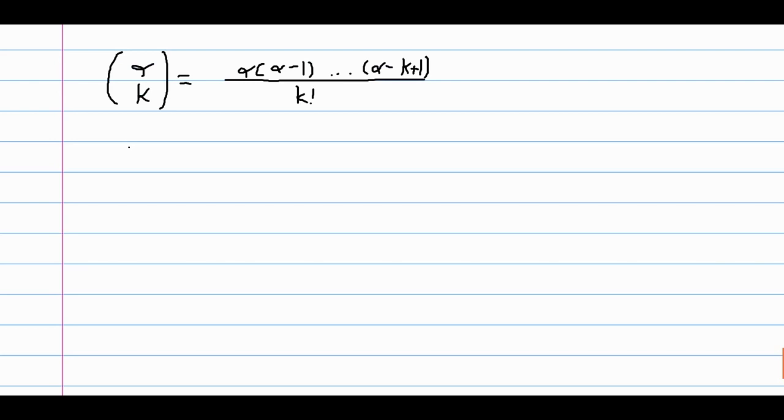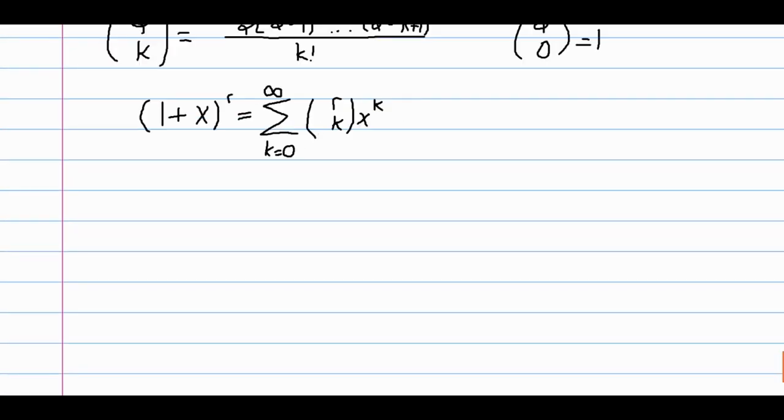Now, the binomial theorem states that one plus x to the r is equal to the sum as k goes from zero to infinity of r choose k times x to the k. And a note here is that for any alpha, alpha choose zero is equal to one.